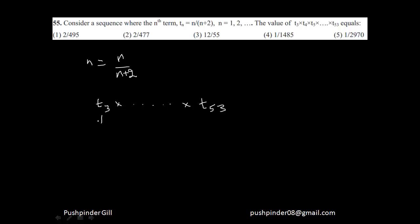Now what is going to be term 3? Term 3 would be 3 upon 5. Term 4 would be 4 upon 6. You can clearly see term 3 would be 3 upon 3 plus 2, term 4 would be 4 upon 4 plus 2, term 5 would be 5 upon 5 plus 2, and so on. So you can clearly see these things are going to get cancelled out if you keep doing it further.